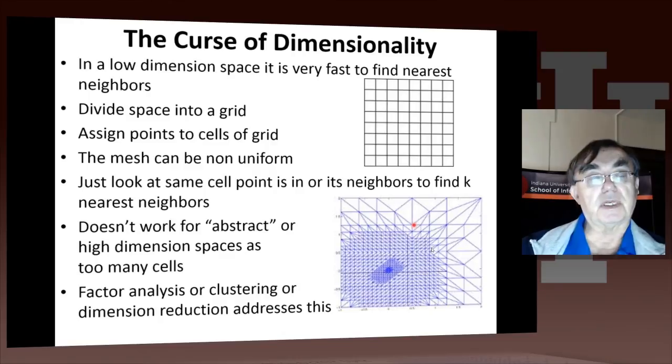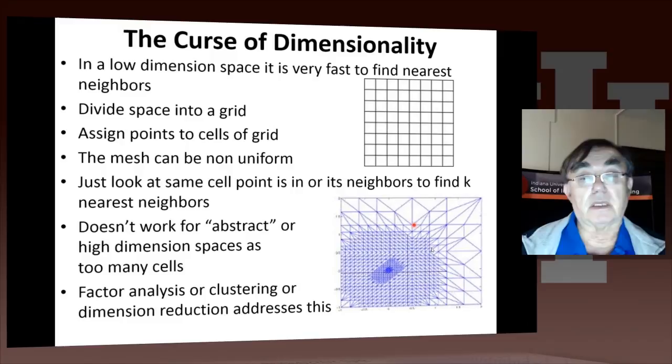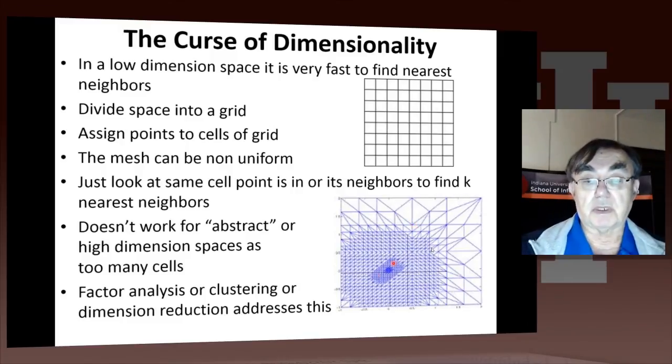Here's a comment about the so-called curse of dimensionality. If your points are in a very low dimension, it is very fast to find the nearest neighbors. What you can do is divide the points into a grid, assign the points to the cells of the grid. You can do that in a non-uniform fashion. Here's an example of a grid where there's a mesh. If I want to find the nearest neighbor to a point who's in this cell here, I only have to look within this cell and maybe the neighboring cells.